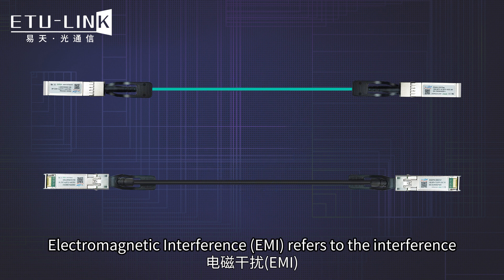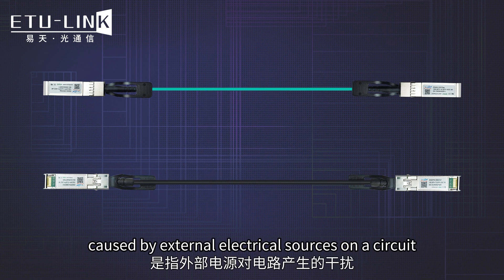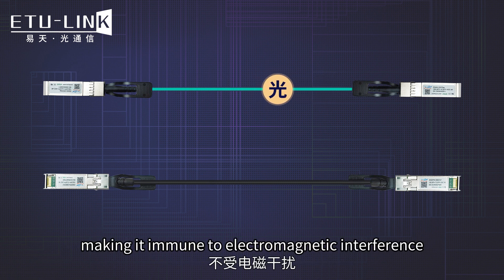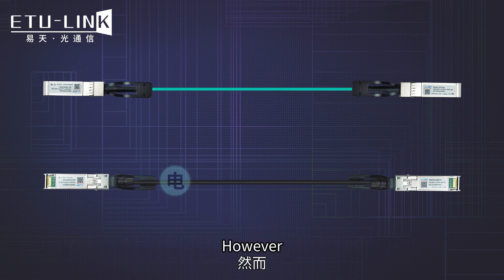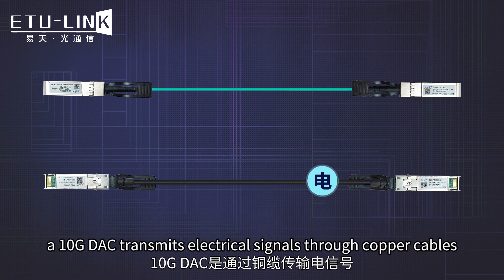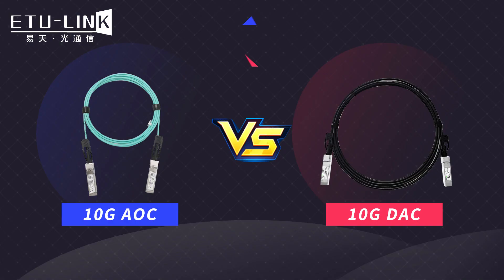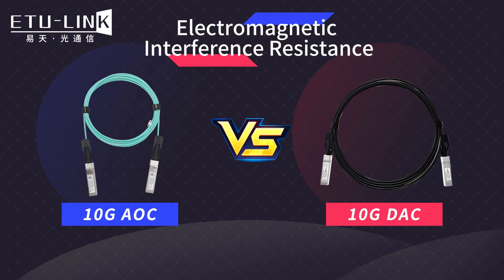Electromagnetic interference refers to the interference caused by external electrical sources on a circuit. A Tianji AOC transmits optical signals through fiber optics, making it immune to electromagnetic interference. However, a Tianji DAC transmits electrical signals through copper cables and is susceptible to electromagnetic interference. For electromagnetic interference resistance, Tianji AOC wins.